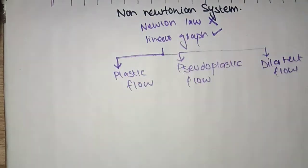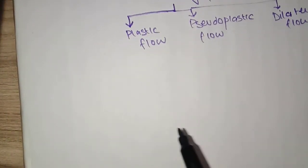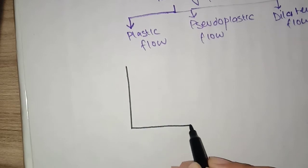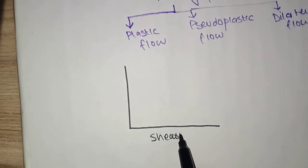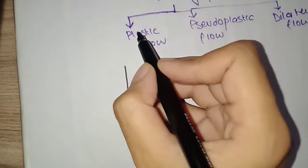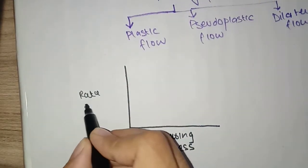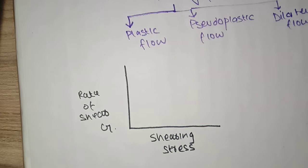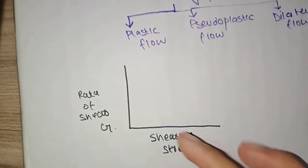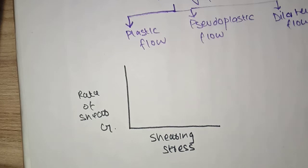Let's discuss plastic flow. The main thing is that the curve doesn't start from the origin. On the X-axis we have shearing stress, and on the Y-axis we have rate of shear. Initially, the body behaves as an elastic body, and when we apply and increase the shear force, it starts to flow.